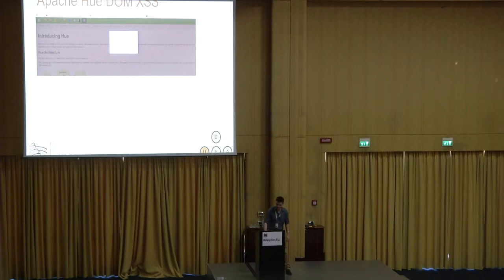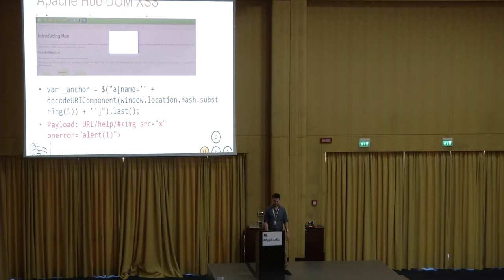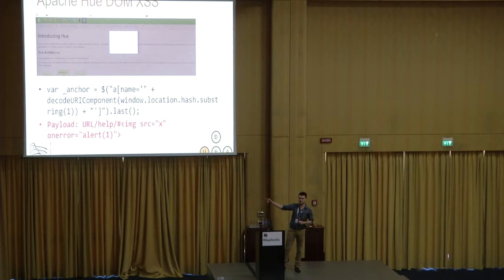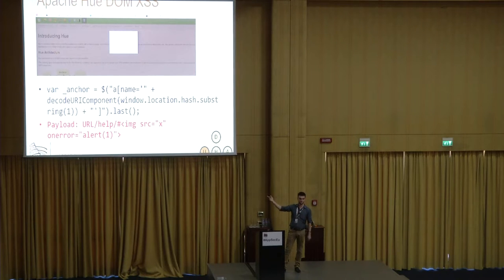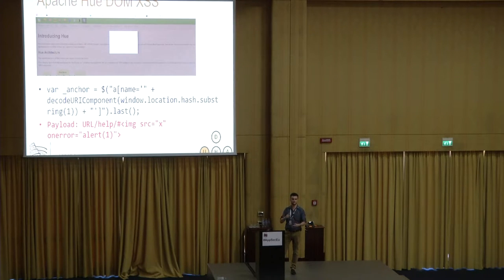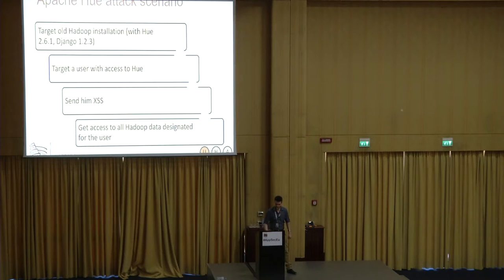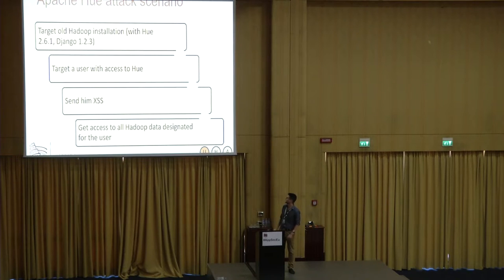It was a simple DOM XSS — here's the payload. This XSS is possible because it is an XSS in jQuery, an old version of jQuery used by the Django framework in Python, which is used by Hue. Maybe it's not a vulnerability in Hue itself, but in an external component. A typical Hue attack scenario: target an old Hadoop installation with this version of Hue and Django, target the user, send the XSS, and get access to all data designated for that user.